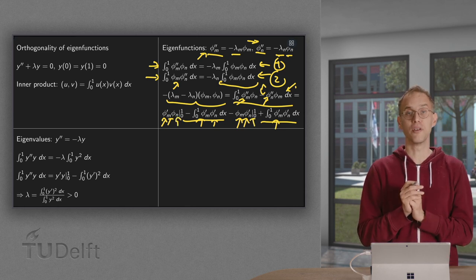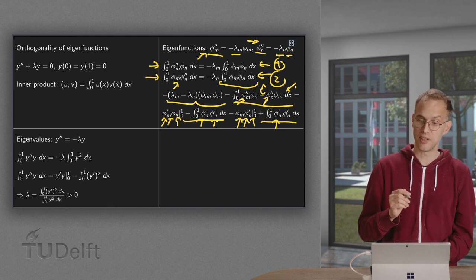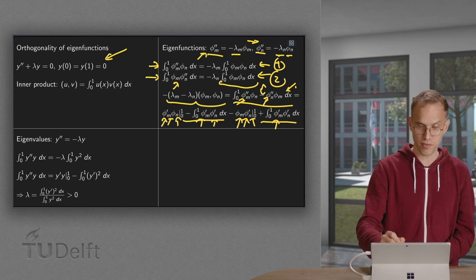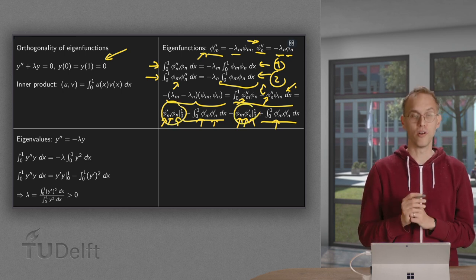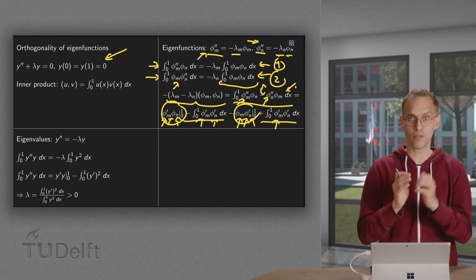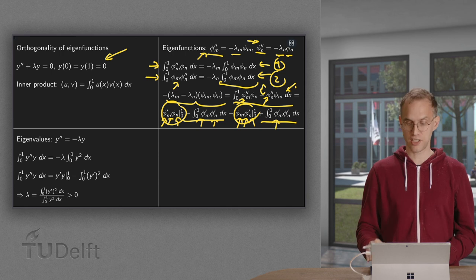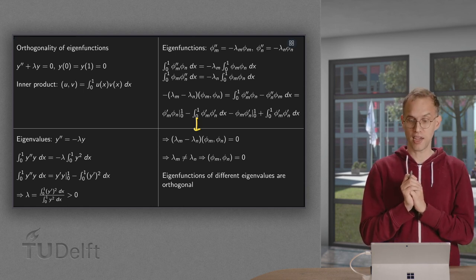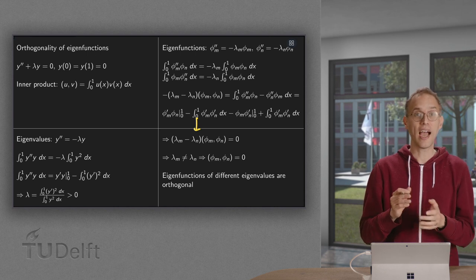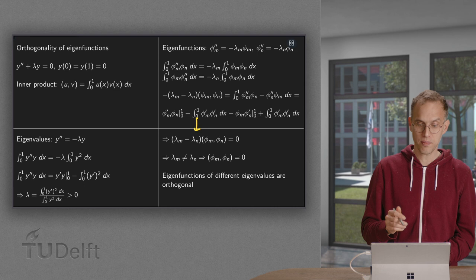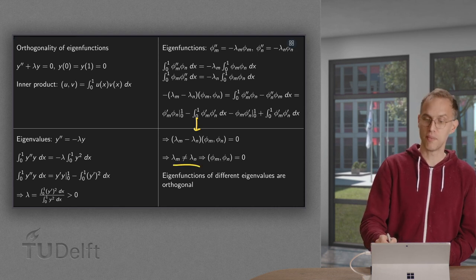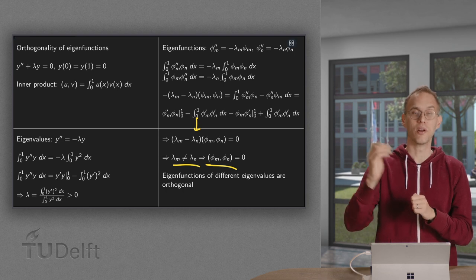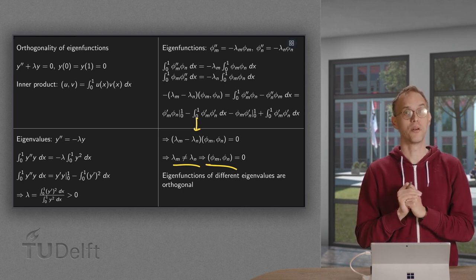The eigenfunctions satisfy the boundary conditions of the eigenvalue problem, so phi n at zero equals zero, phi n at one equals zero, and likewise for phi m. Therefore the boundary terms are both zero and the entire left hand side drops out. We are left with lambda m minus lambda n times the inner product of phi m and phi n equals zero. This means either the eigenvalues are the same (m equals n), or if the eigenvalues are different, the inner product of phi m and phi n equals zero — so eigenfunctions corresponding to different eigenvalues are mutually orthogonal.